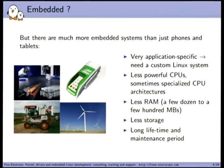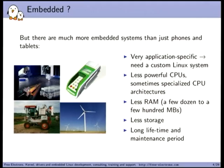These application-specific systems typically have far less powerful CPUs — a few hundred megahertz is common. They may use specialized CPU architectures: much more than x86 and ARM — MIPS, PowerPC, but also Blackfin, Microblaze, NIOS, and other architectures you've probably never heard of. They also have less RAM, less storage, and longer lifetimes and maintenance periods. So the constraints are quite different from consumer-grade devices.